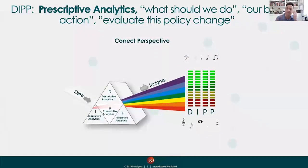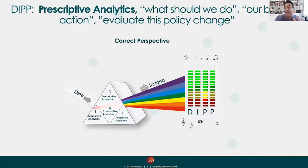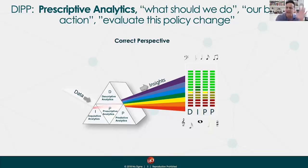The big picture that spawned a lot of this capability is the idea of enterprises moving into something called prescriptive analytics. You have the DIPP framework — descriptive, inquisitive, predictive, and then prescriptive — which gives a nice paradigm of the analytics that Fortune 500 companies are doing today.